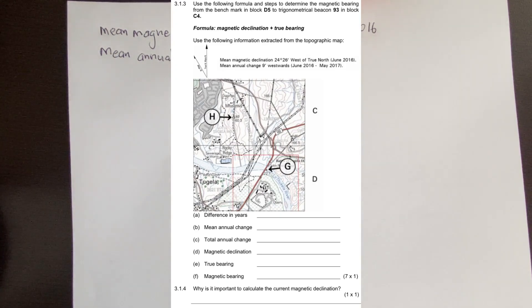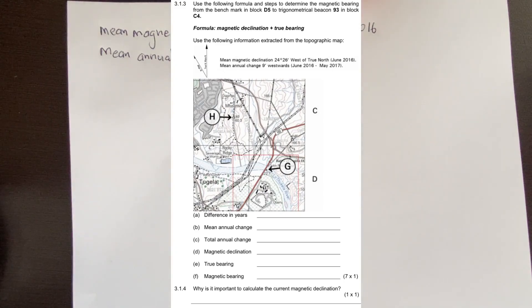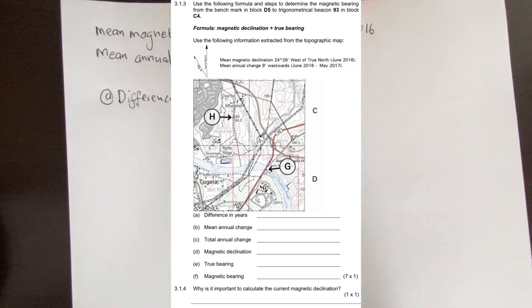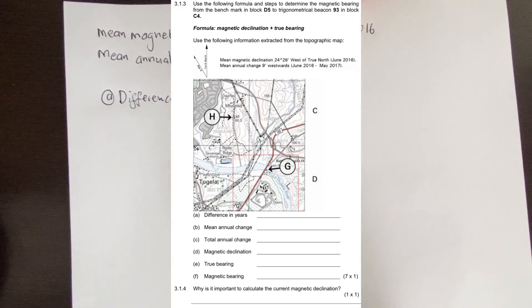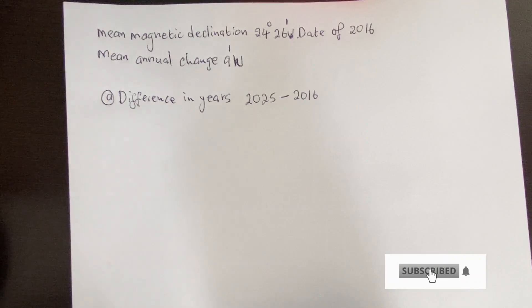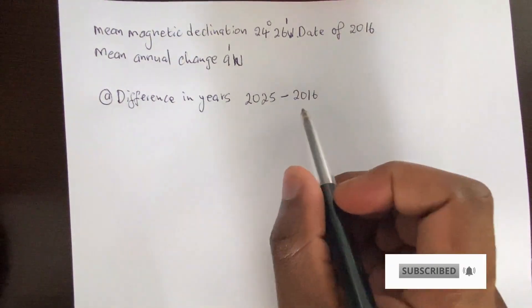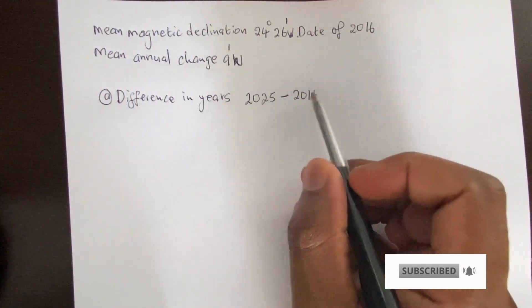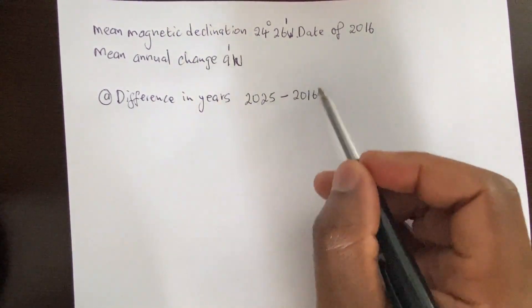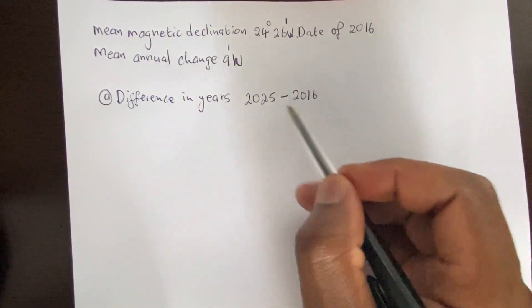In your question you are not given which year to use to calculate your magnetic bearing. So when you calculate magnetic declination, you need to assume the current year. In this case we are in 2025, so we are going to use 2025.